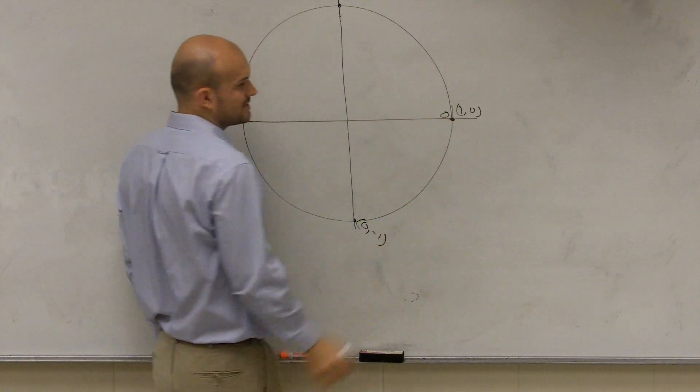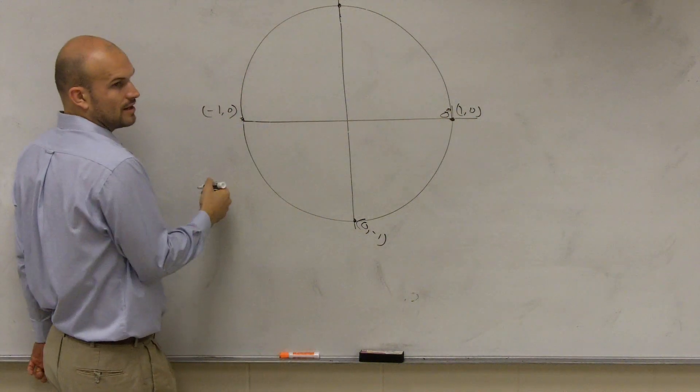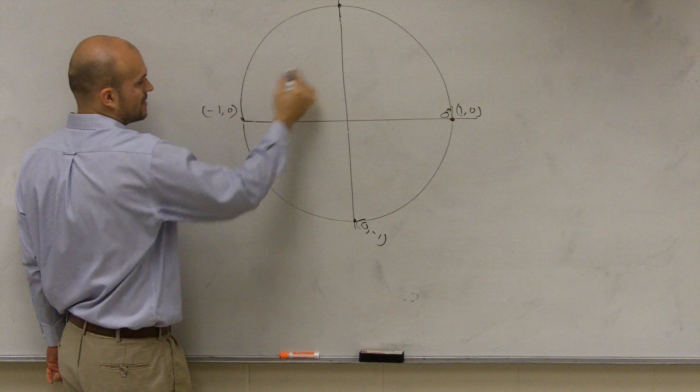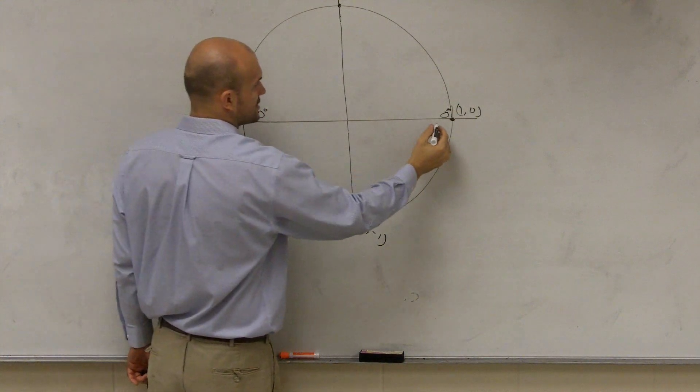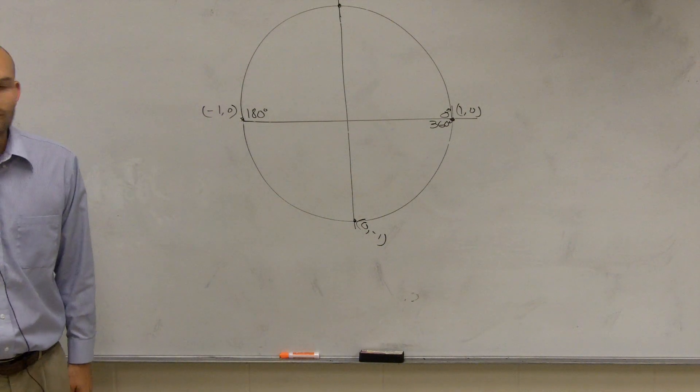Then if we don't go anywhere, we're at 0 degrees. If we go halfway around a circle, how far do we go? Halfway around, 180 degrees. If we go all the way around a circle, we went how far? 360 degrees.